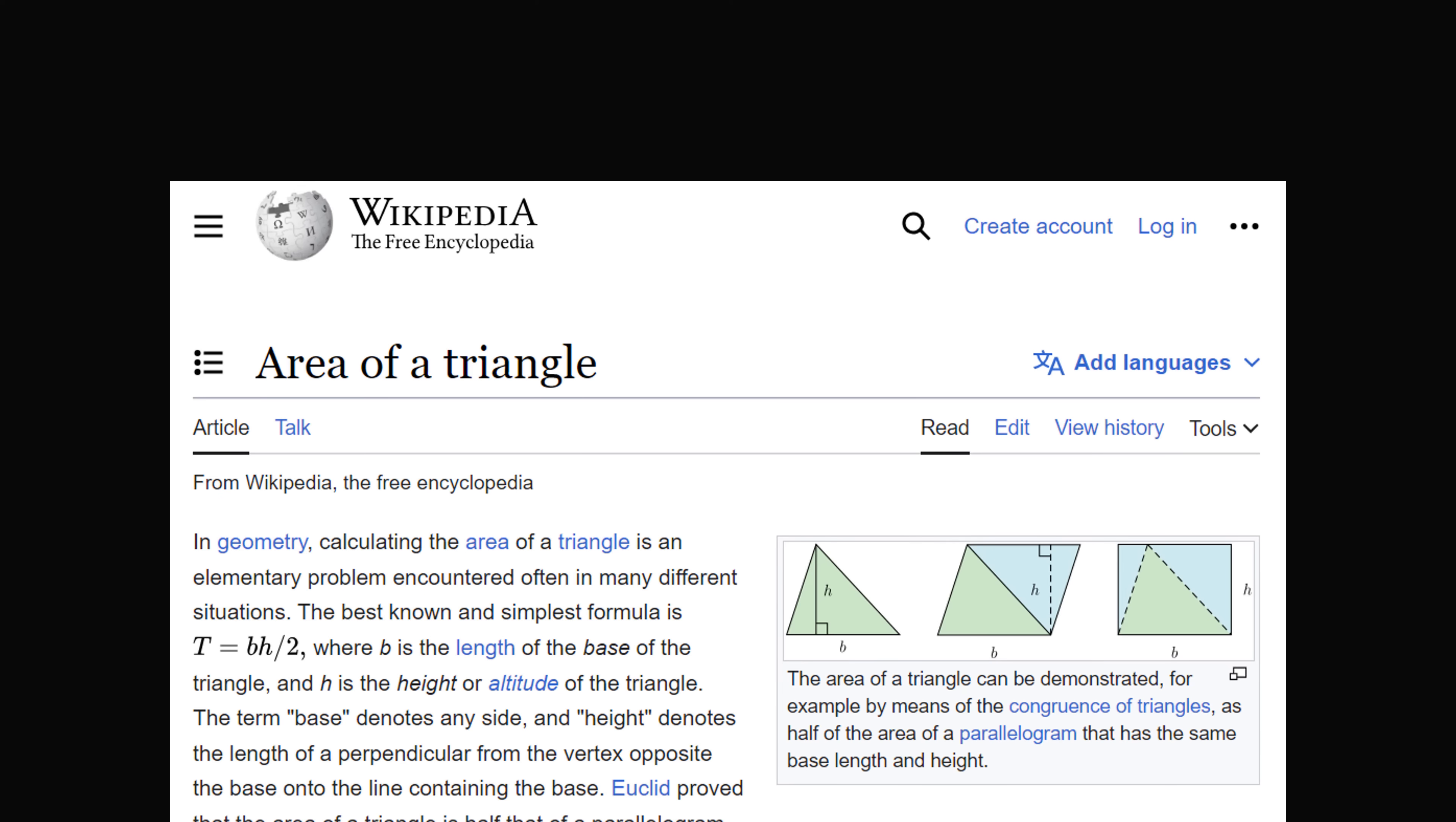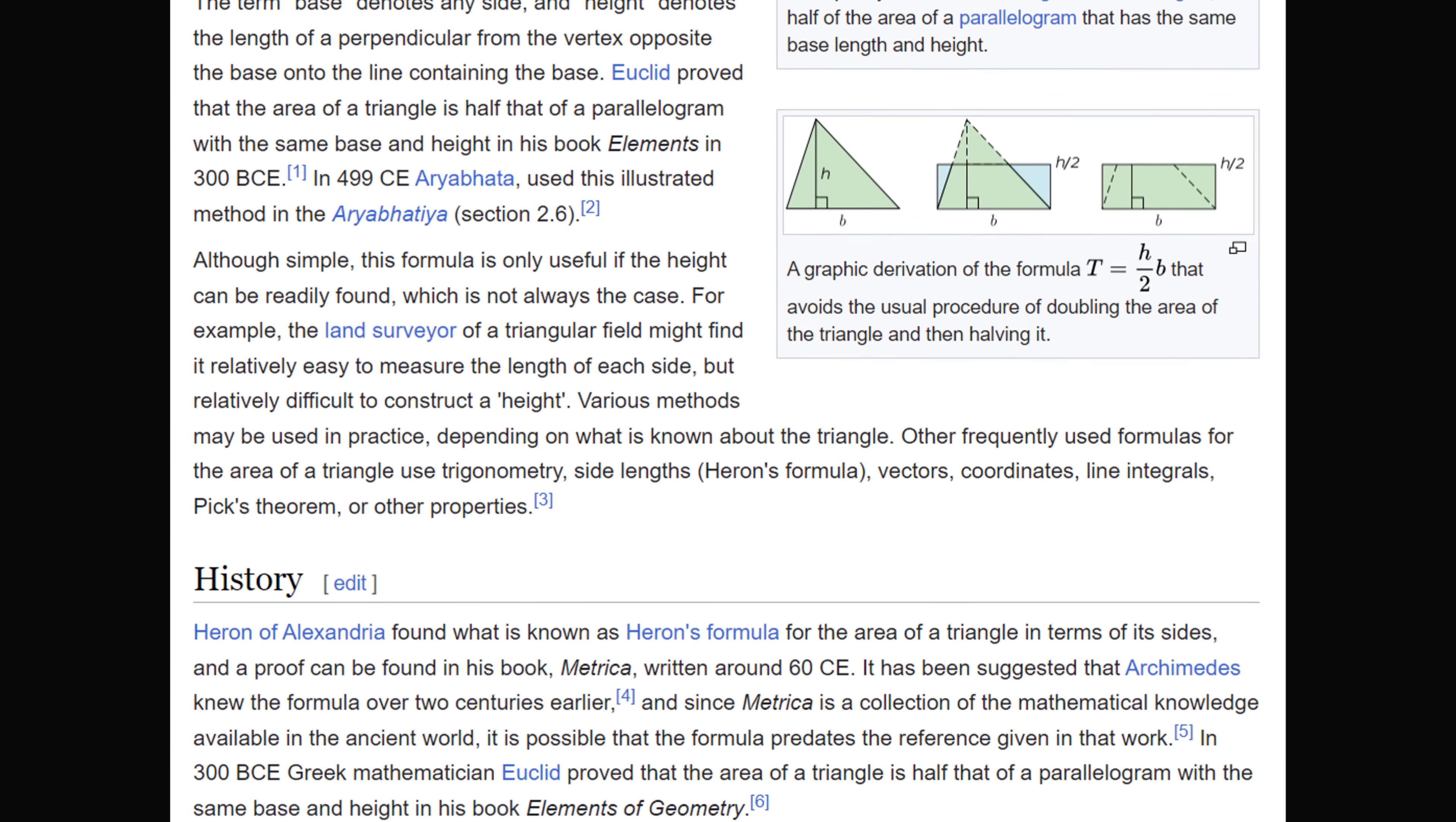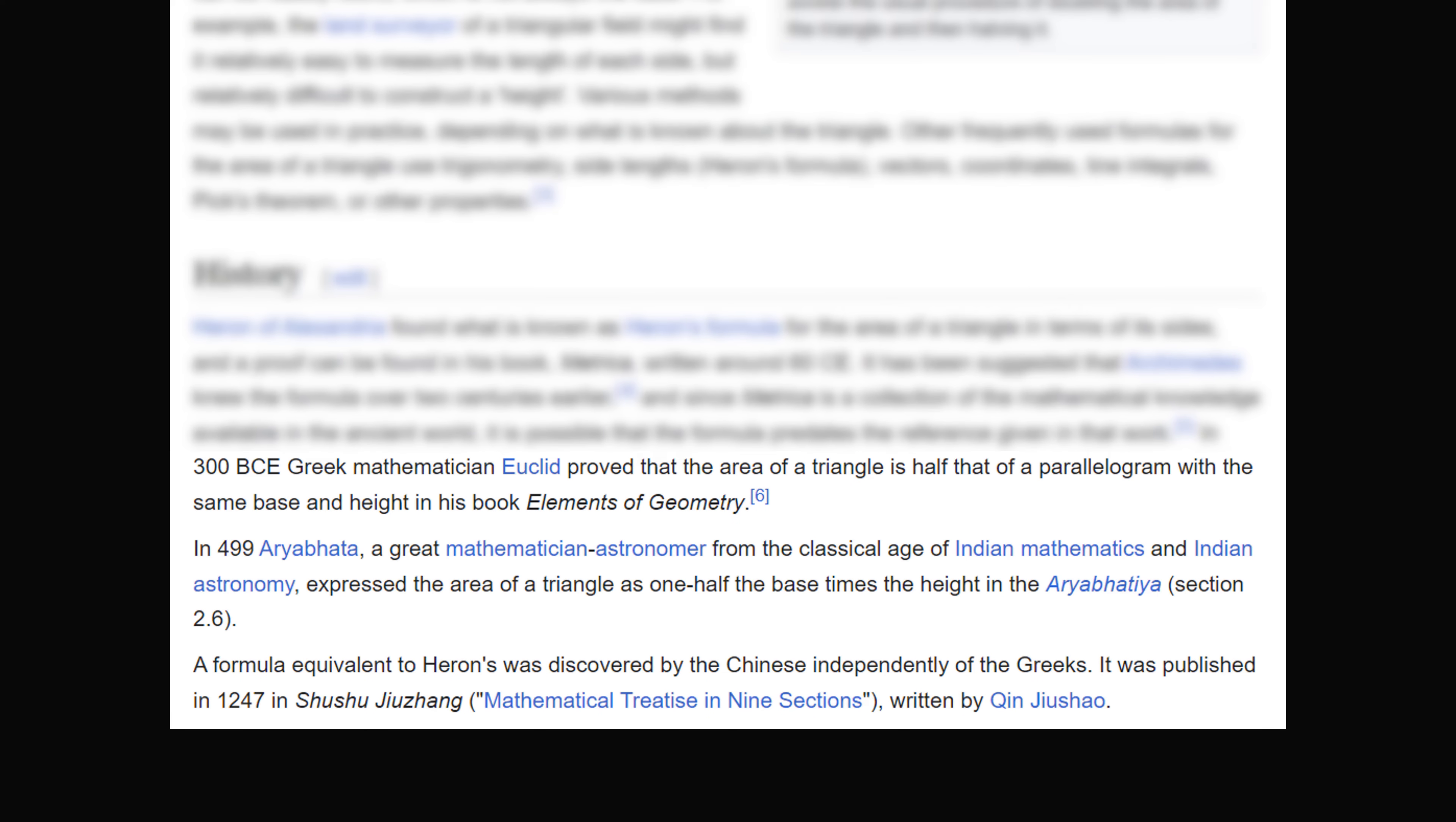So thankfully we now have Wikipedia to fill in the gap. I looked up the entry for area of a triangle and you can scroll down to the section where it says history. So it starts out with Heron's formula and then we get to the part about Euclid. In 300 BCE, Greek mathematician Euclid proved that the area of a triangle is half that of a parallelogram with the same base and height in his book Elements of Geometry.